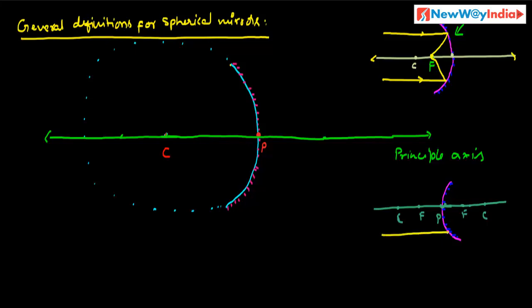In the case of a convex mirror, the principal focus is behind the mirror. The incident ray reflects, and extending the reflected ray meets at the focus behind the mirror. So, the principal focus is a point on the principal axis where a beam of light meets or appears to come from.